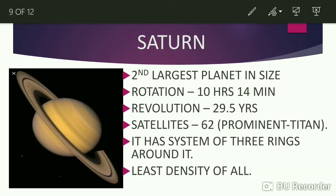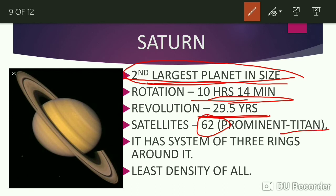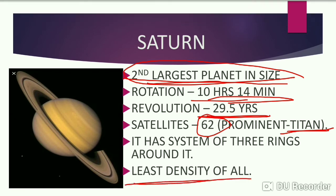Next comes Saturn. Saturn is the second largest planet in size after Jupiter. Rotation time taken by Saturn is 10 hours and 14 minutes. Revolution time taken by Saturn is 29.5 years. Total number of satellites of Saturn are 62. The prominent satellite of Saturn is Titan. It has a system of three rings around it, and it is the least dense planet in our solar system.